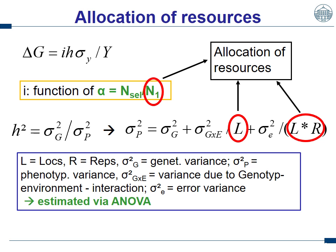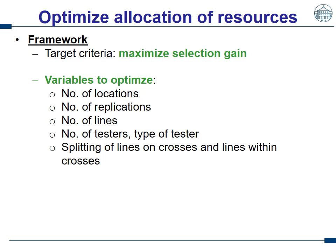Let's look at the allocation of resources and how they impact the selection gain formula. The number of lines we produce, test, and select enters the selection intensity — the selected fraction is calculated by the finally selected lines divided by the number of tested lines. The number of test locations and replications enters the phenotypic variance and thus the heritability. Both have an influence on the expected selection gain in my breeding program.